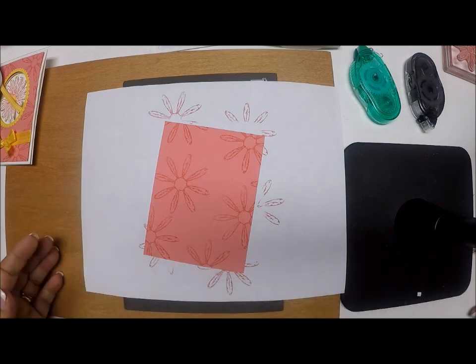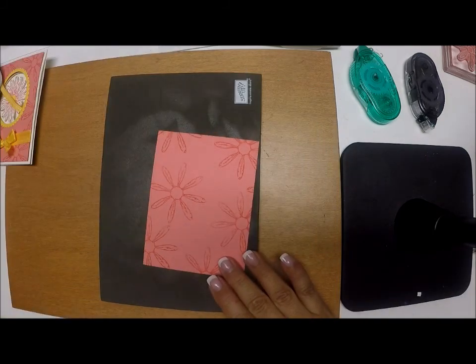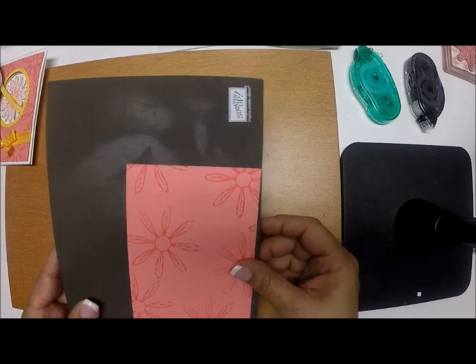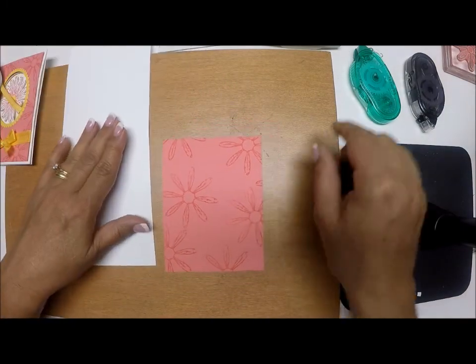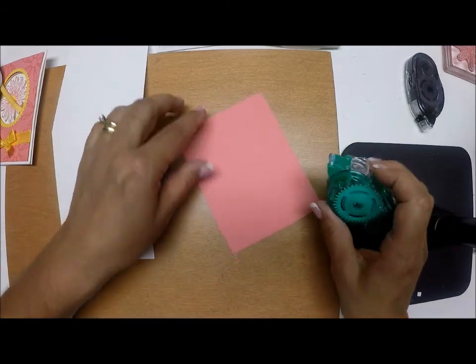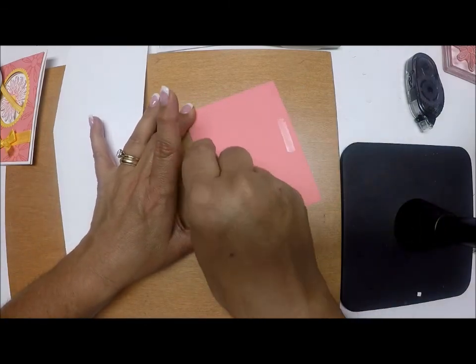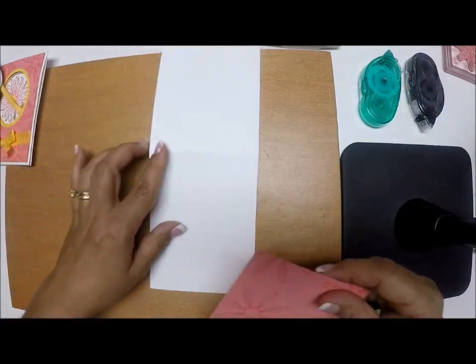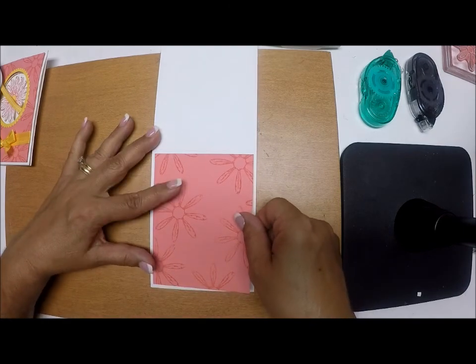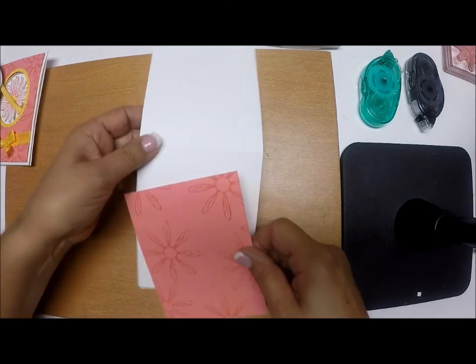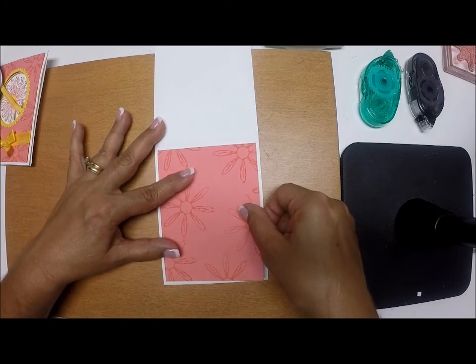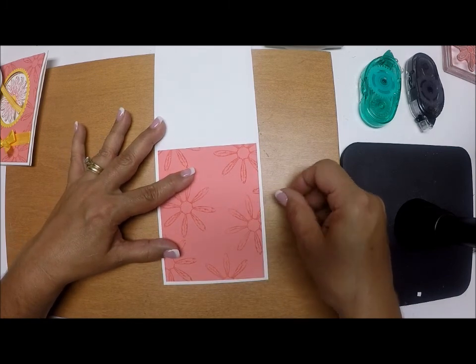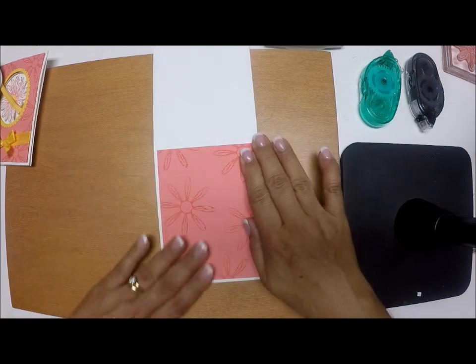So now what we have to do is make our window. And to do that, we are going to attach this so that we know where to place it. We're going to attach this with repositionable tape, just a couple little lines, because we're going to take it off afterwards. We're going to center that onto our card base.